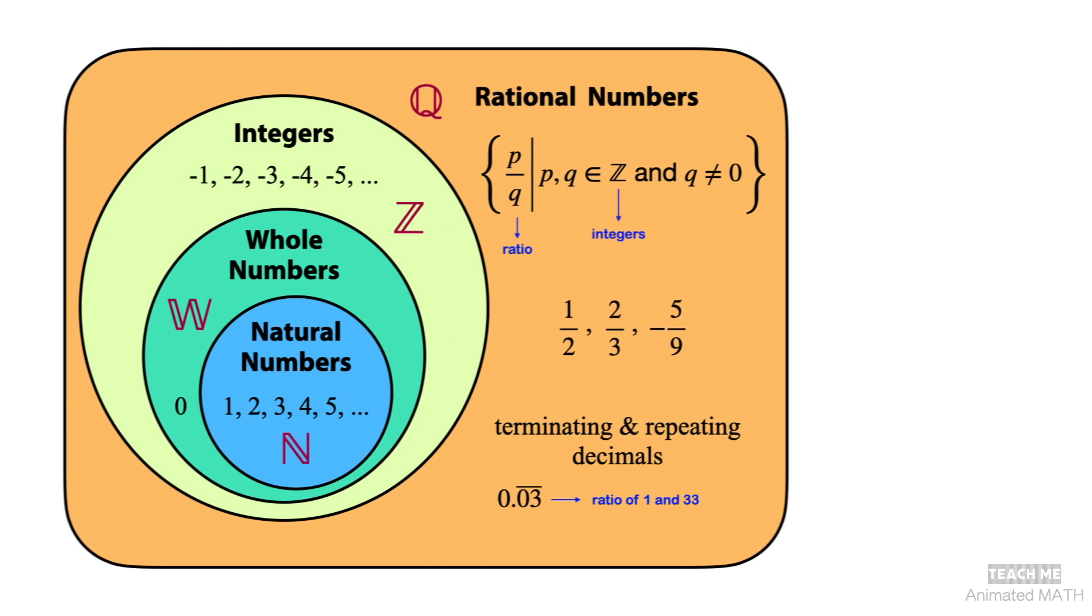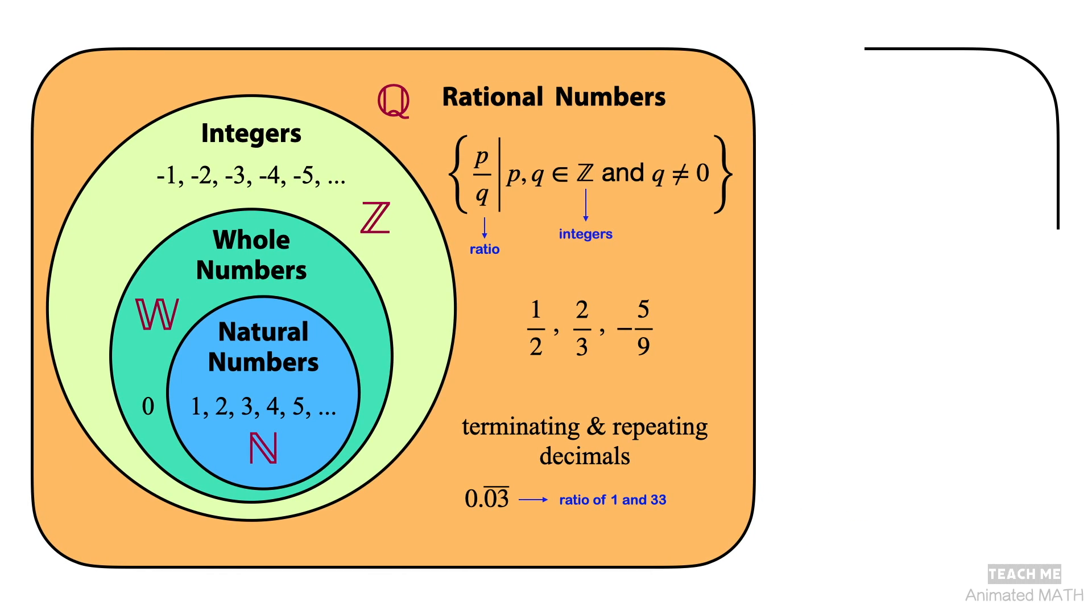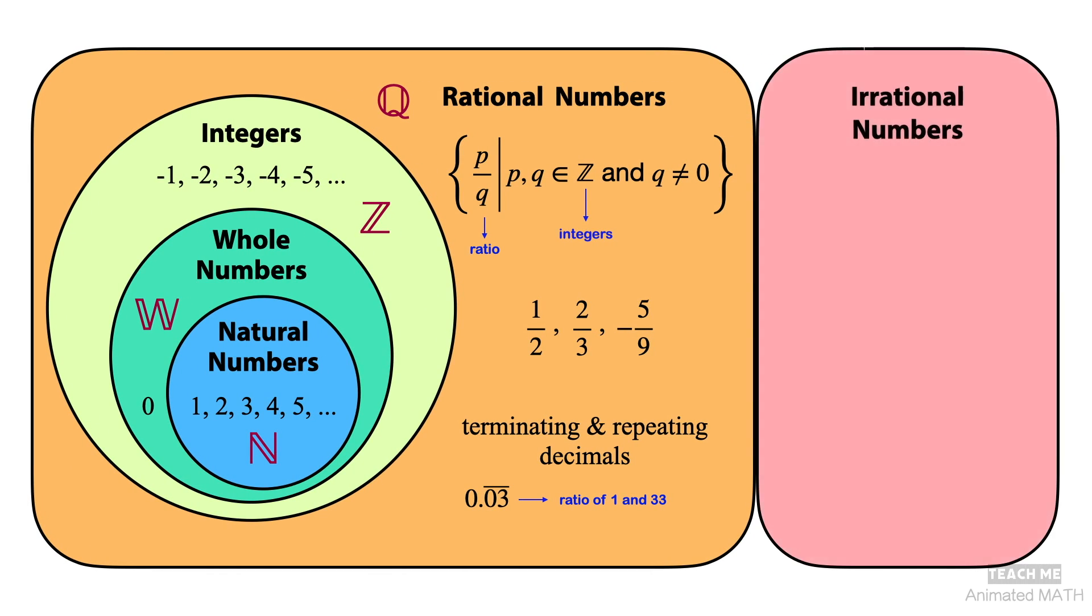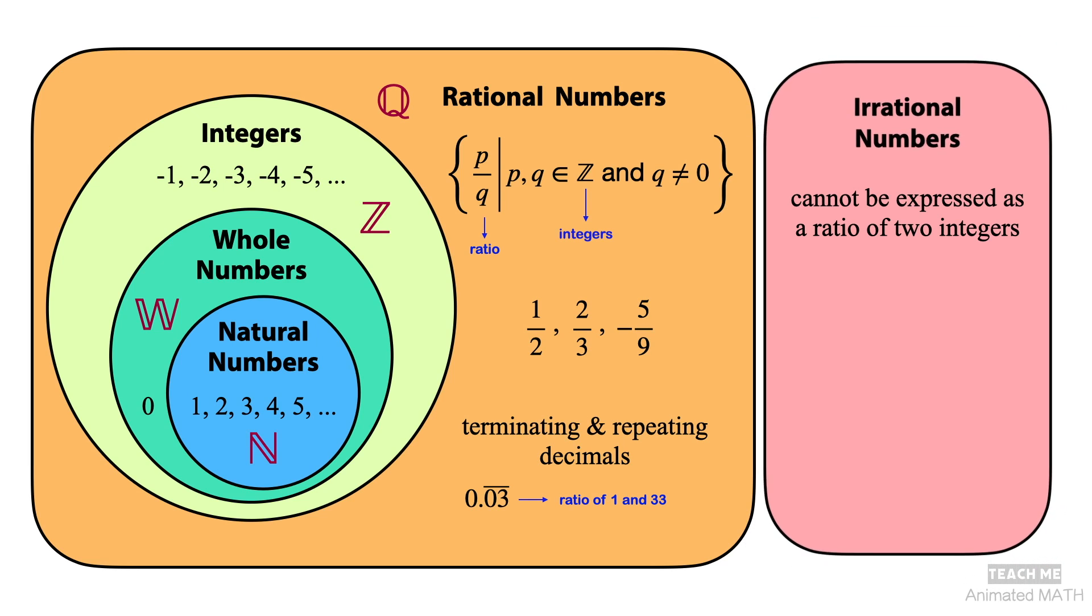Some numbers are not part of the set of rational numbers. These numbers cannot be expressed as a ratio of two integers. These numbers are part of the set of irrational numbers.